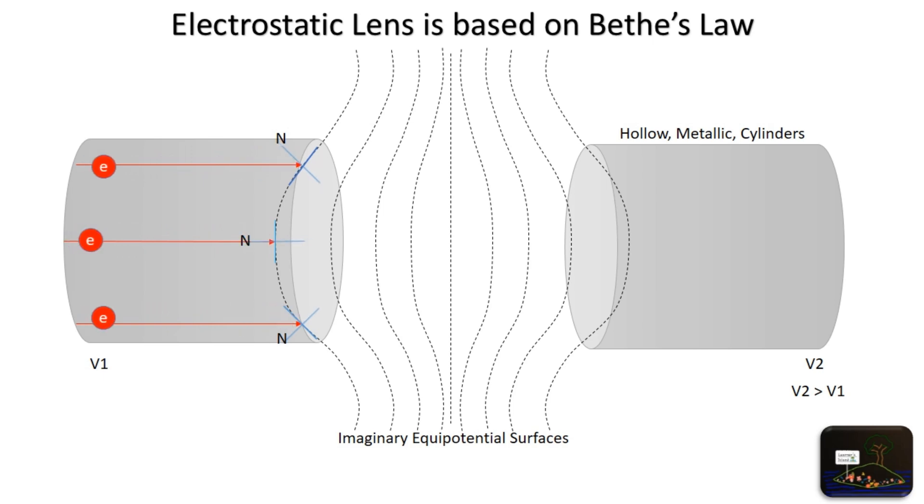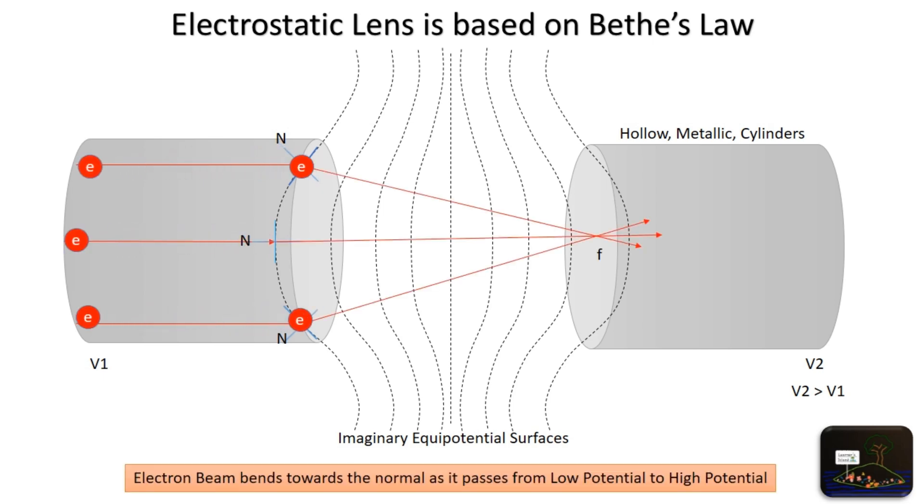Consider the beam on upper side. For it, the equipotential layer is slanted, hence normal will be taken accordingly. And by the law of Bethe's, when an electron is transferred from low potential to high potential, it bends towards the normal, making the upper beam to bend downwards as seen here.